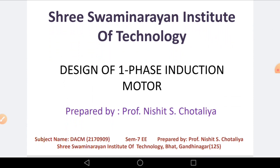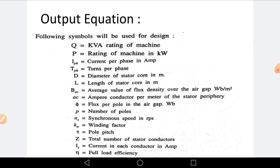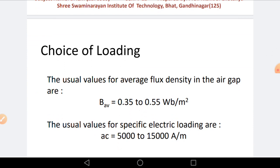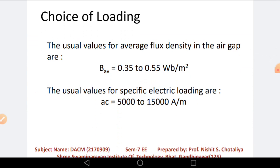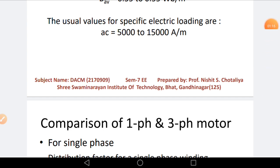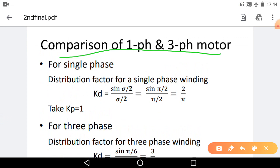As previously we started Unit 2 on the design of single phase induction motor, in which we already discussed the output equation for single phase induction motor. Then we discussed some things about the loading of the machines — choices for the electrical loadings, particularly the values for specific magnetic as well as electrical loading. So we are going to discuss our next point for this unit: comparison for single phase and three phase induction motor, specifically based on its design.